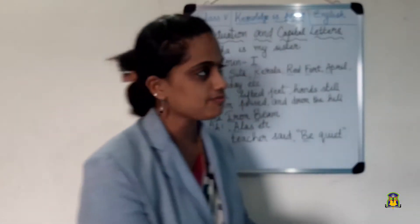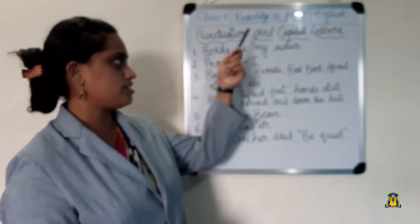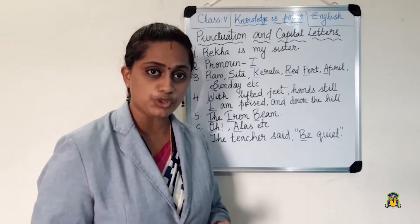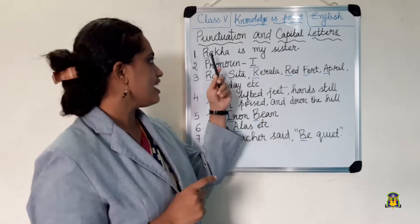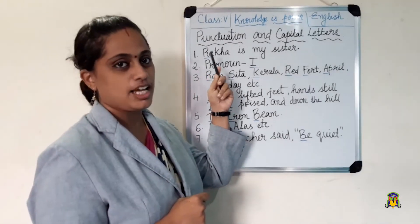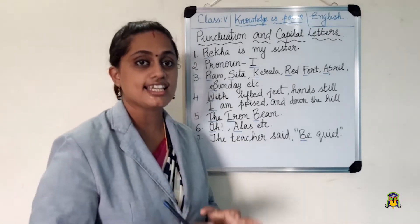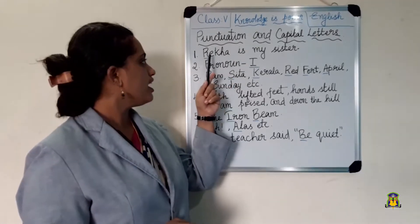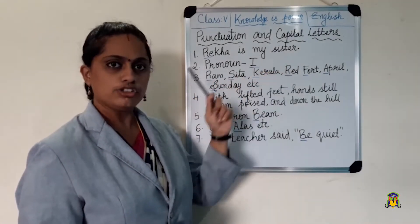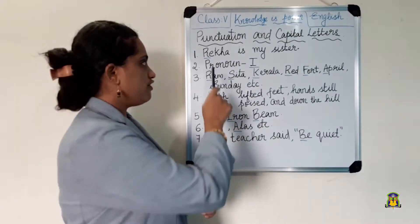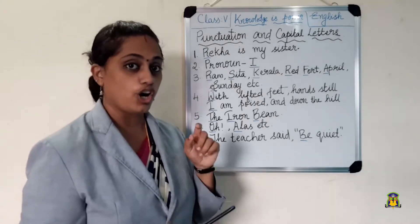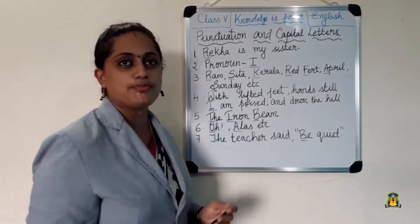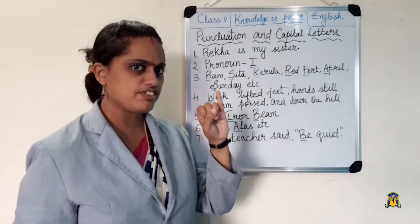Have a look at the board. The name of our lesson is punctuation and capital letters. The first instance where we have to use capital letters is at the beginning of a sentence — a sentence should always begin with a capital letter. For example: 'Rekha is my sister.' That is a sentence. The first letter should always begin with a capital letter — 'Rekha' is beginning with a capital letter. That is the first instance.